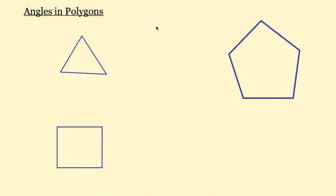Before we start, let's talk about what a polygon actually is. A polygon is a 2D shape where all of the sides are straight lines. So a circle cannot be a polygon, for example. The most simple polygon you can have is a triangle where all of the sides are straight. Another example is a square and then a pentagon. As you can see, all of the sides are straight in all of those.